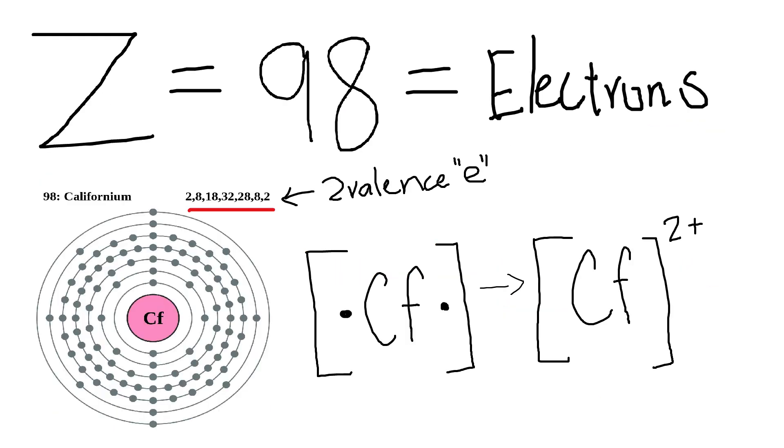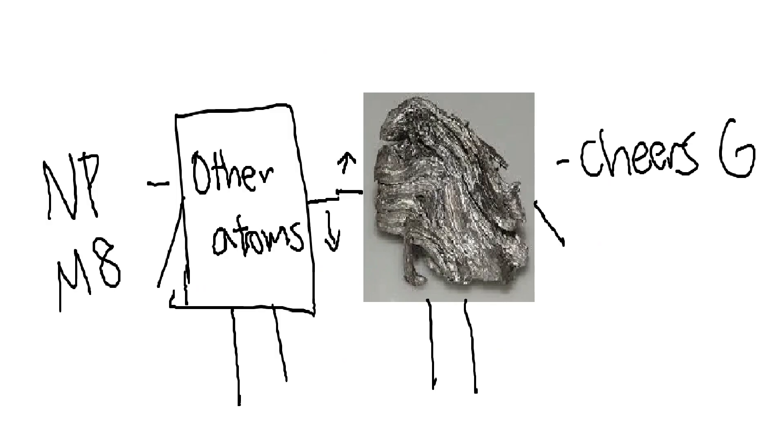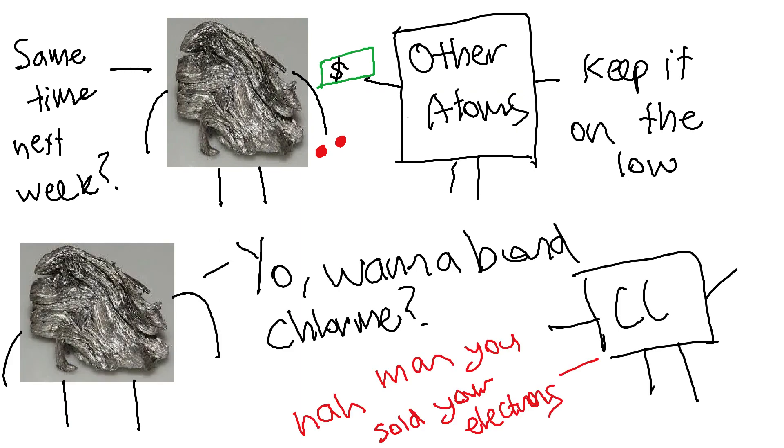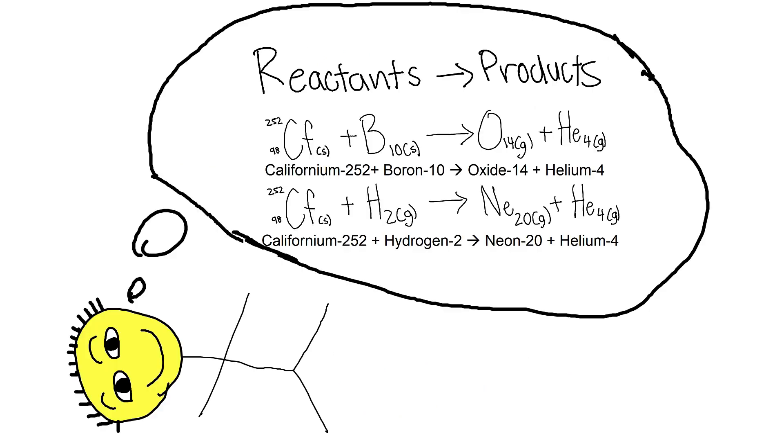Californium has a unique atomic structure. It has an atomic number of 98, which has a type of electron configuration that makes it extremely reactive due to its unfilled valence shell. This means that it can easily form bonds with other atoms or exchange electrons with other atoms and forms chemical compounds quickly. This is why it is able to react with both boron and hydrogen, forming the compounds mentioned just then.